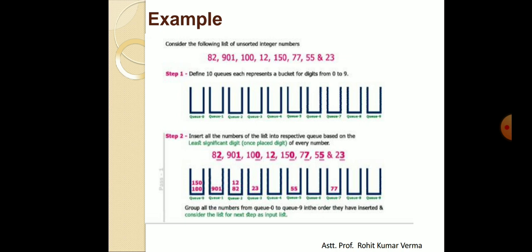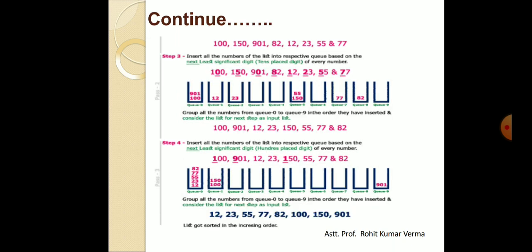After collecting from all queues, our new list is: 100, 150, 901, 82, 12, 23, 55, and 77. Now we start the second pass, sorting based on the second LSB — the tens place digit. We again distribute into queues: 100 and 901 go to Q0 (tens digit 0), then we check for 1 in the tens place, then 2, then 3, and so on similarly.